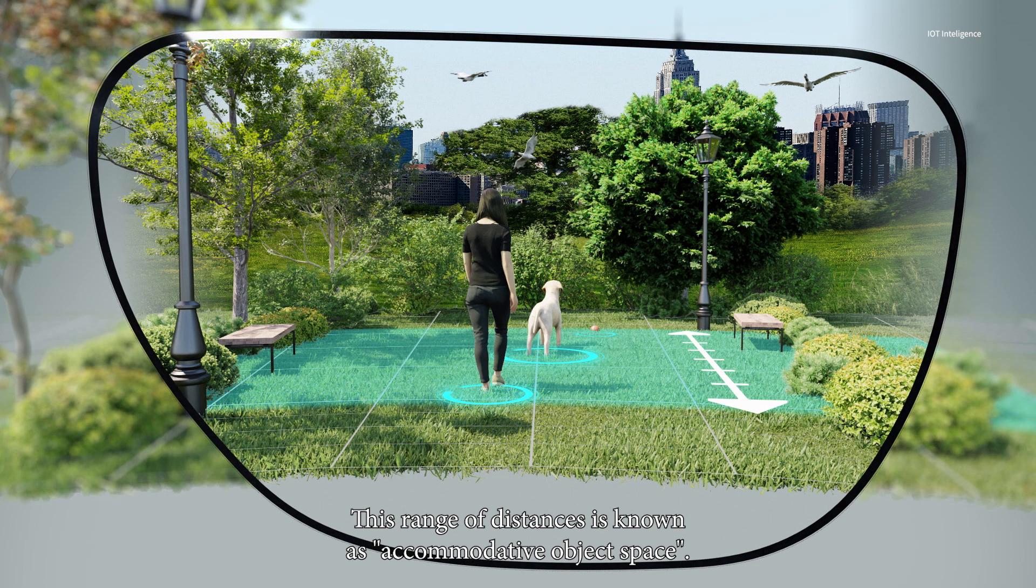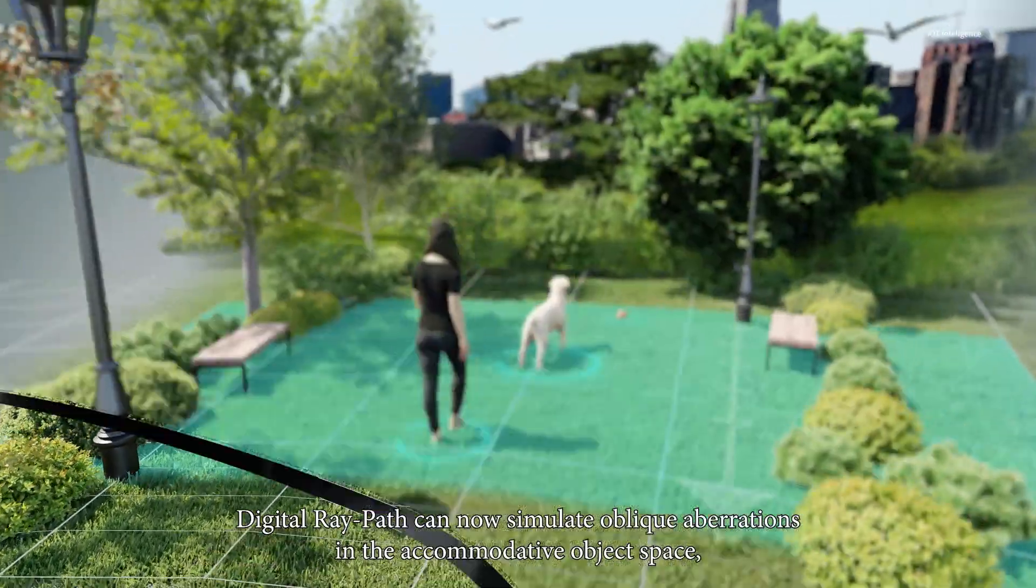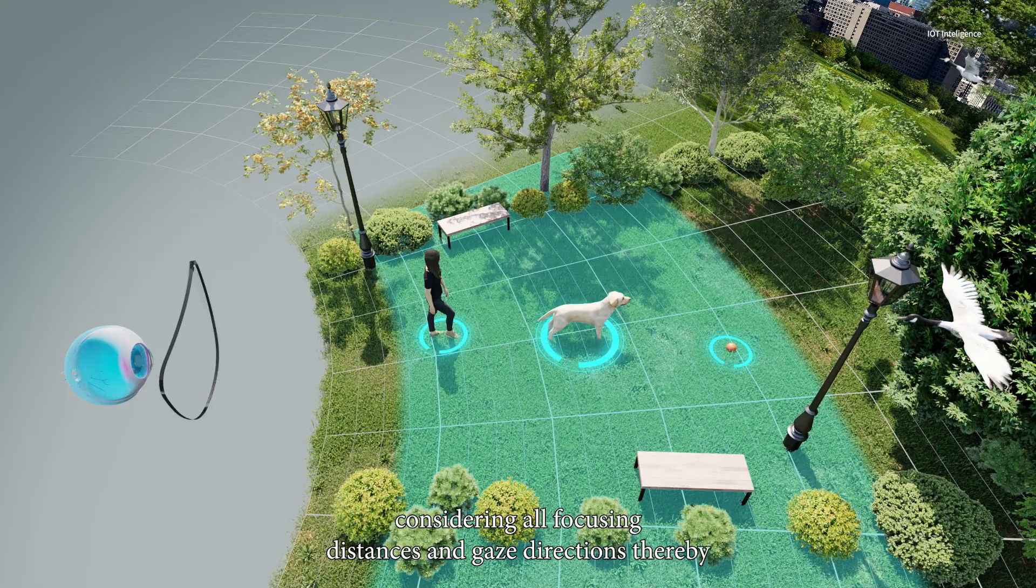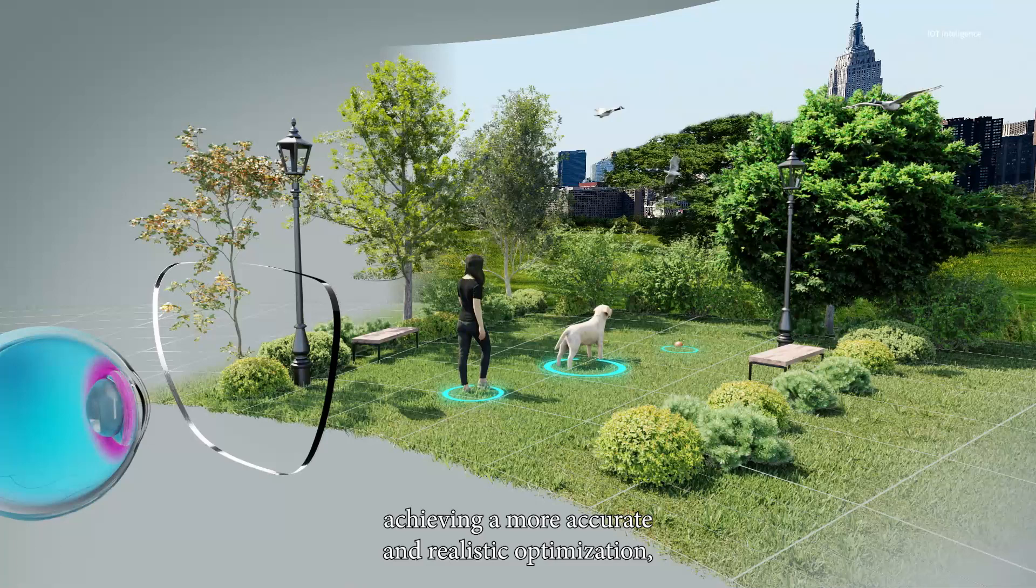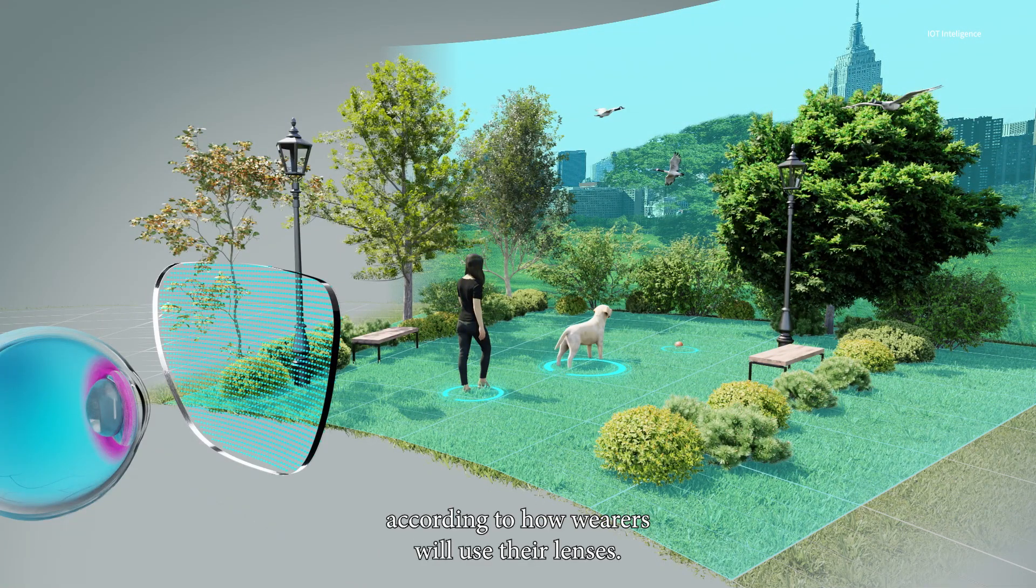This range of distances is known as accommodative object space. Digital ray path can now simulate oblique aberrations in the accommodative object space, considering all focusing distances and gaze directions, thereby achieving a more accurate and realistic optimization according to how wearers will use their lenses.